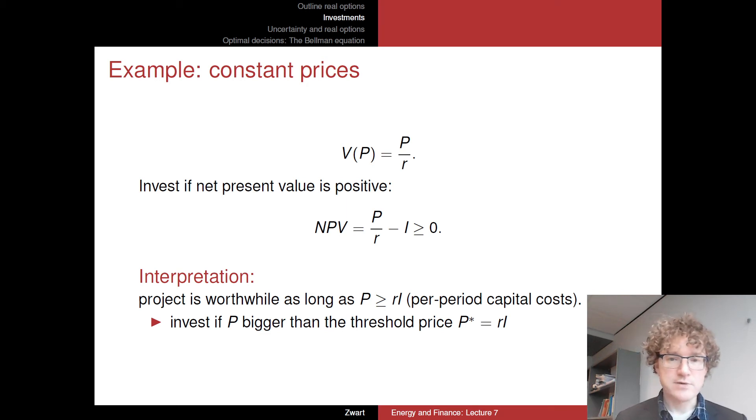So the interpretation is obviously again, it should be clear here, this project is worthwhile doing as long as this price is bigger than the R times I. And that makes sense because R times I is exactly the per period capital costs of making this investment. So the alternative would be putting this I in the bank, which would give you R times I each year. And as long as this P is large, and then that R times I, you will be better off making the investment, and if not, you will be better off not doing that.